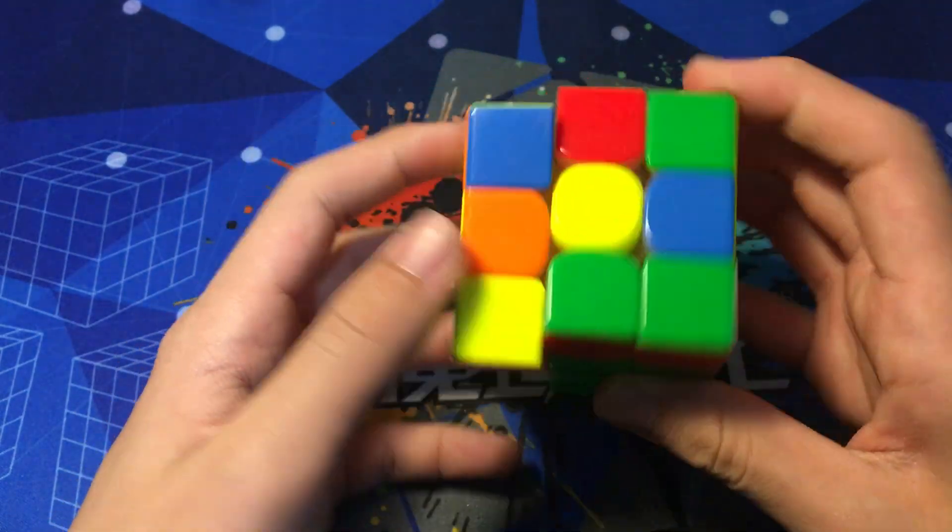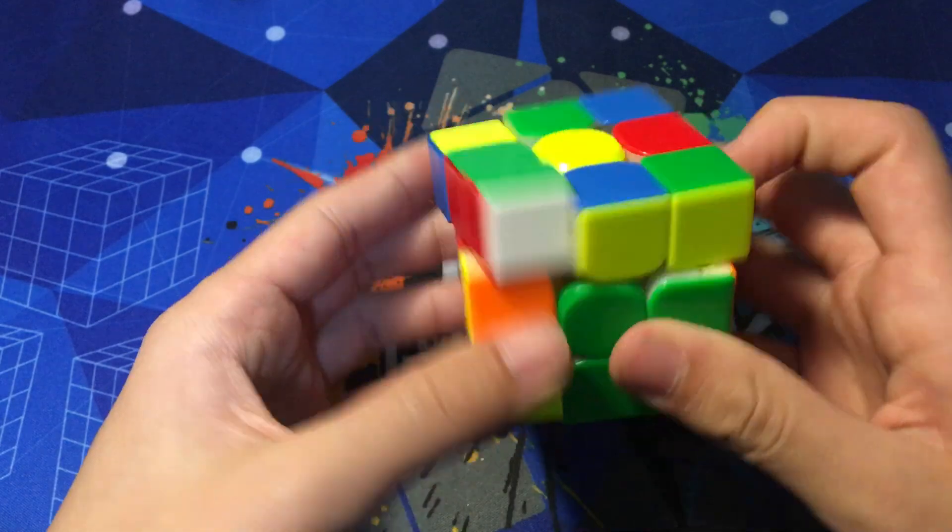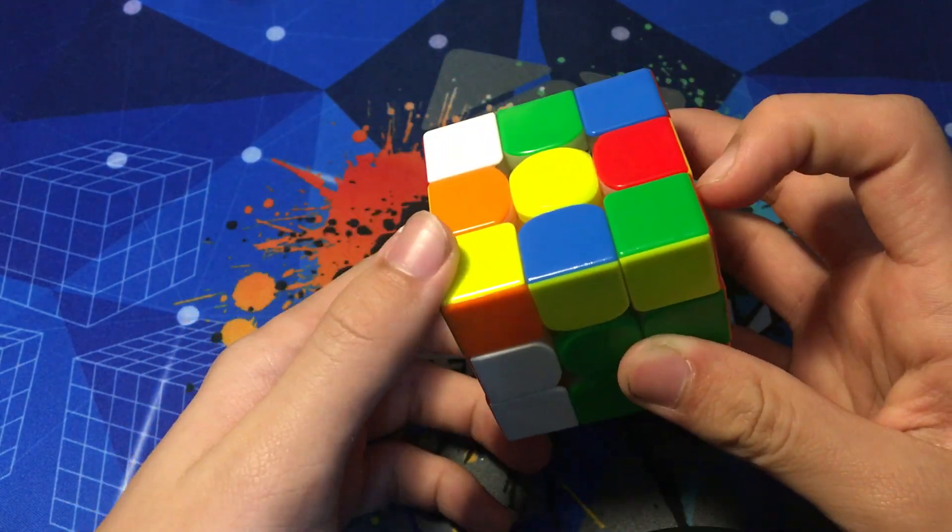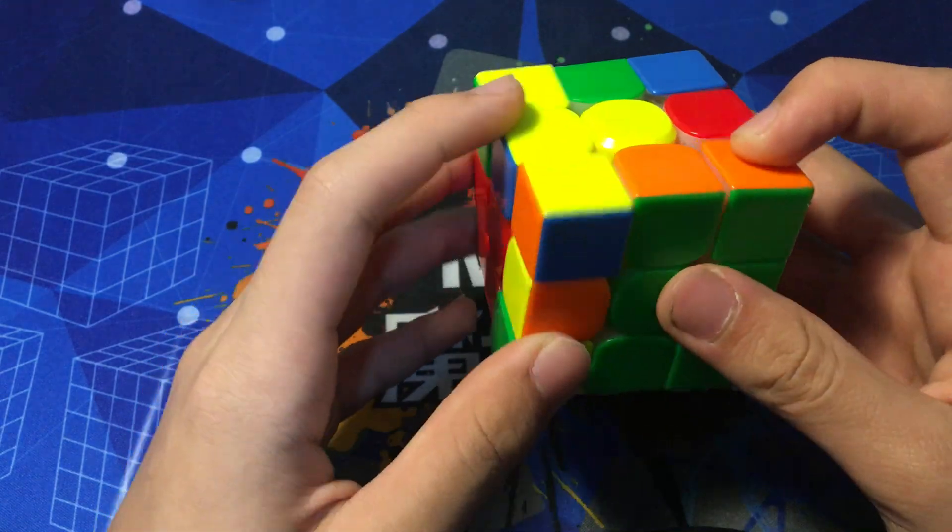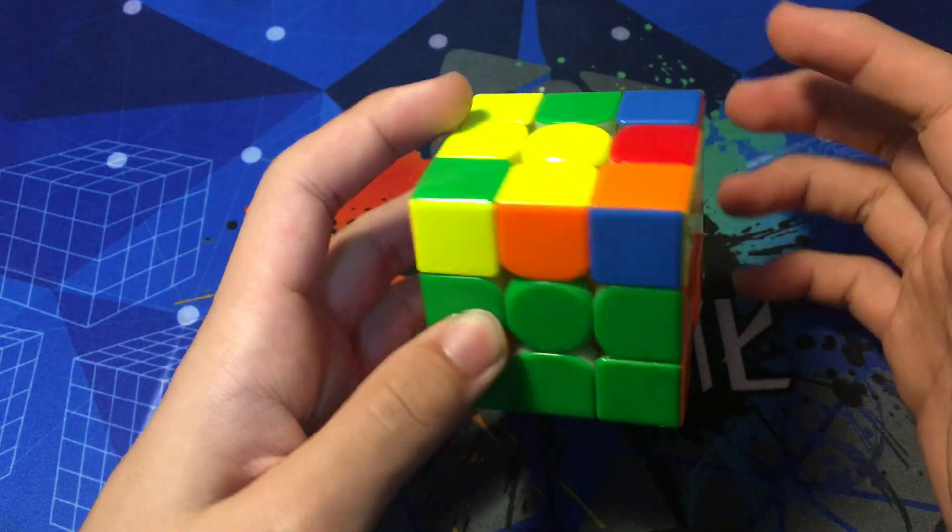Which means if we solve this pair like normal, we're going to get a dot case, which is not good, so we solve this and cancel into a sledgehammer, which is a shorter solution and also gets us this very nice OLL.